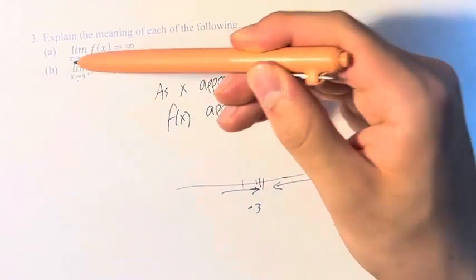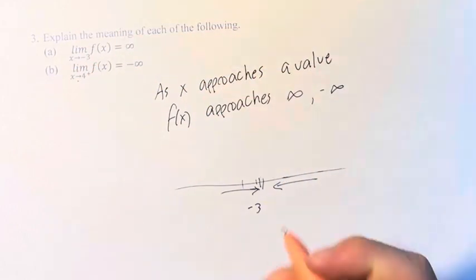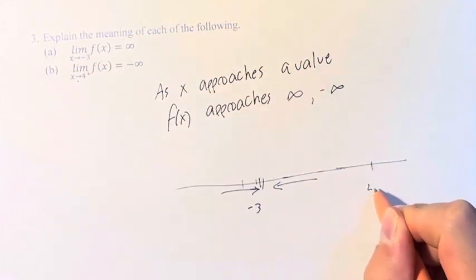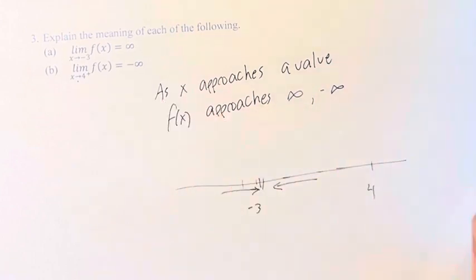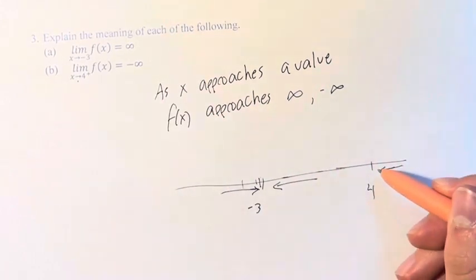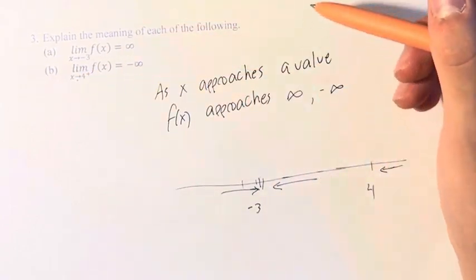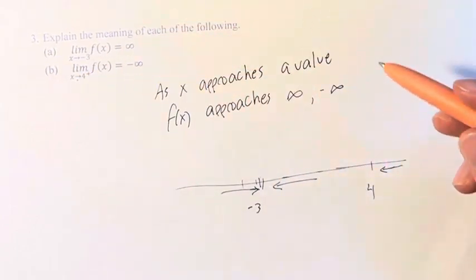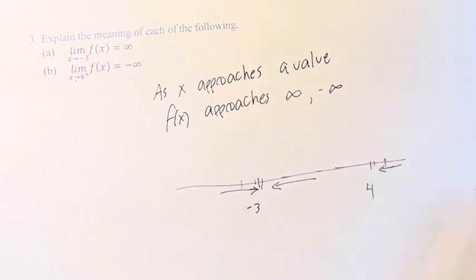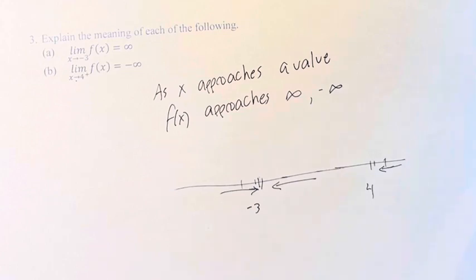Slightly different here in part b, we have the limit as x approaches 4 from the right. That means if we have 4 over here, as the value of x approaches 4 from the positive direction, the value of the function is going to go off to negative infinity. So if we look at 4.1, 4.01, 4.001 — these numbers are going to get really, really big and go off to infinity as you keep going closer and closer to 4.